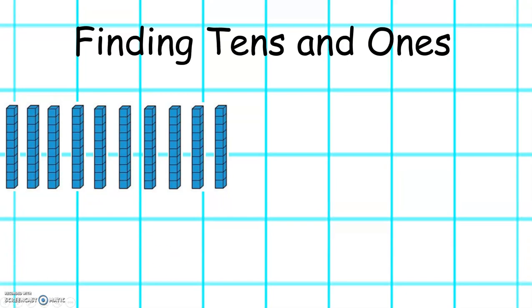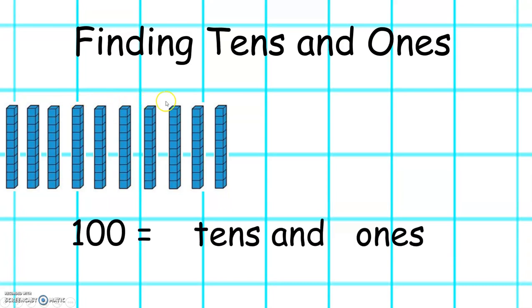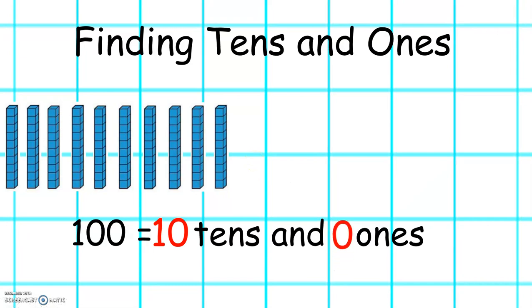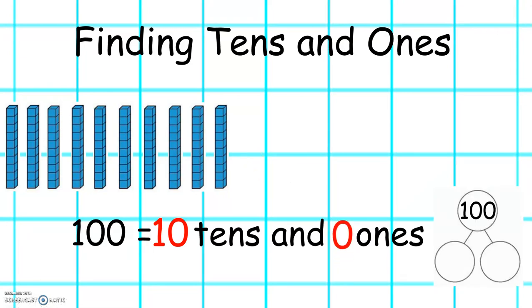Let's count this number: 10, 20, 30, 40, 50, 60, 70, 80, 90, 100. 100 equals how many tens and how many ones? Let's count the tens: 1, 2, 3, 4, 5, 6, 7, 8, 9, 10 tens. And how many ones? There are 0 ones. On our number line diagram, 100 would look like 100 and 0.